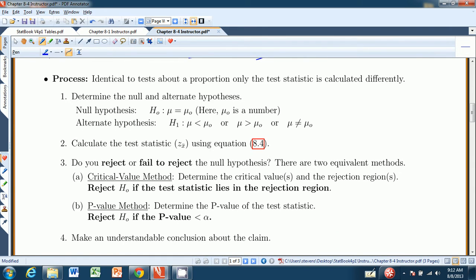Okay, the process is identical to the last two sections. We determine the null and alternate. The null will always look like this: it'll have a μ because we're talking about a population mean, equals, and then that'll be some value. Alternate, you can have a left-tailed test, right-tailed test, or two-tailed test. Calculate the test statistic using equation 8.4 above. And in this case, we actually can do both of these because getting p-values from the z-table is quite easy. So the critical value method: we reject the null hypothesis if the test statistic is in the rejection region, or we reject the null hypothesis if the p-value is smaller than the significance level, alpha. And then we're going to make an understandable conclusion.